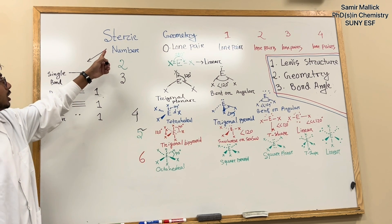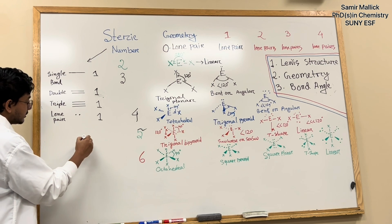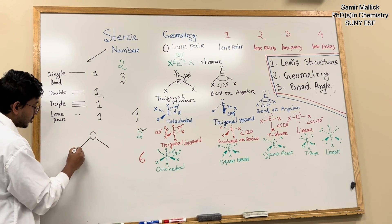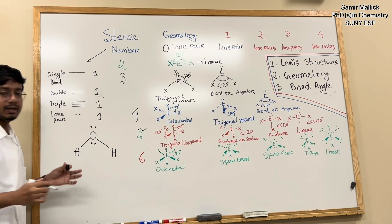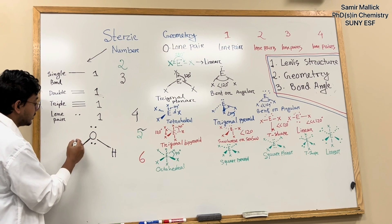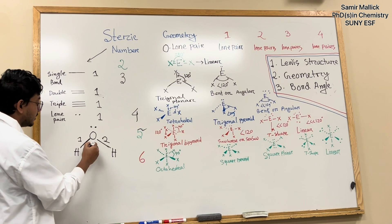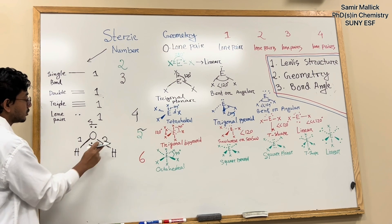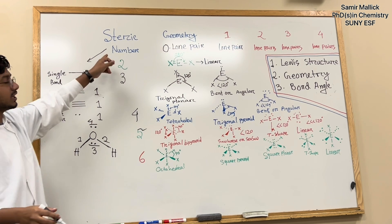To determine the steric number, I can give you an example. We already know the structure of a water molecule. In the water molecule, there are two single bonds — one, two — and two lone pairs — one, two, three, four. So this number four is counted as the steric number.